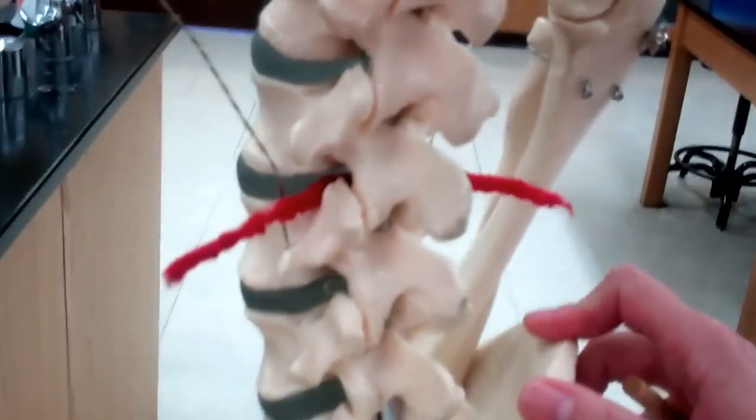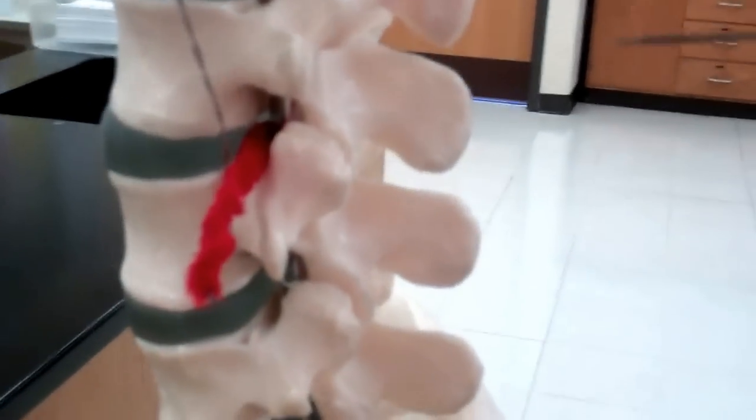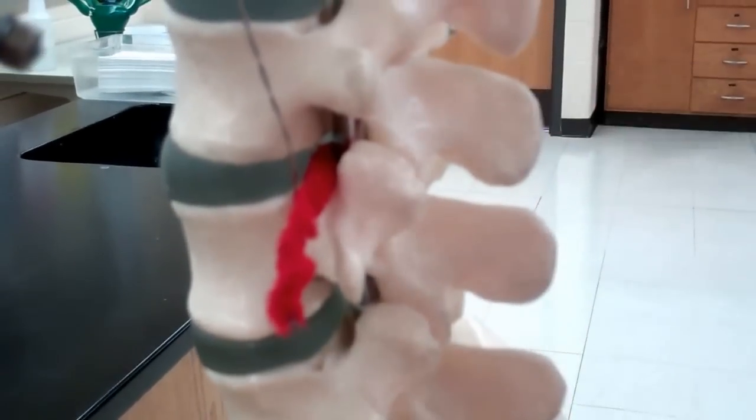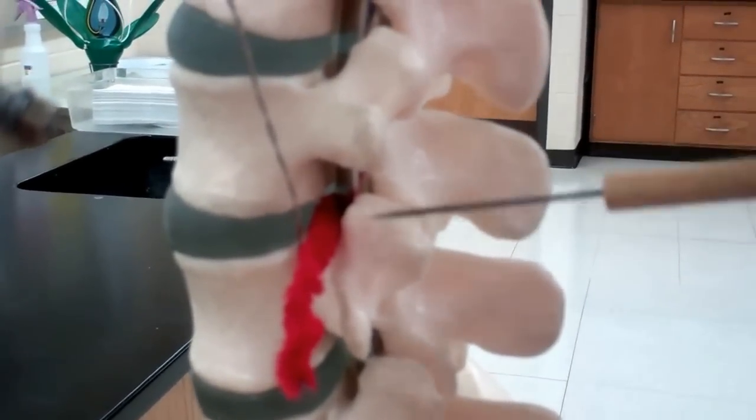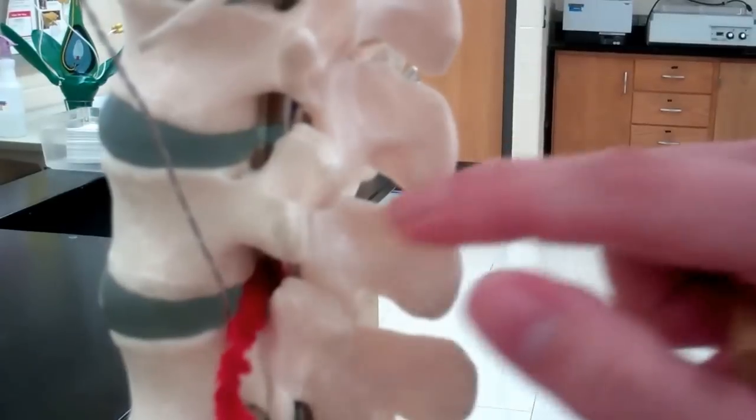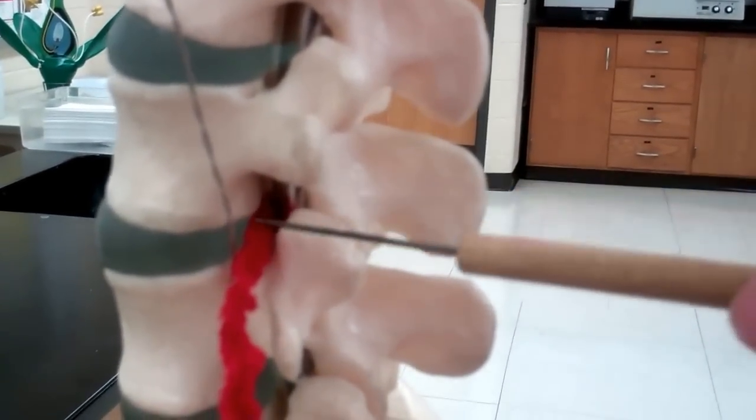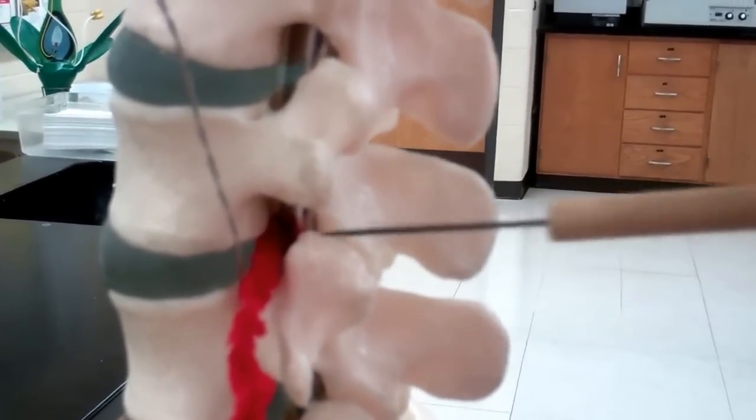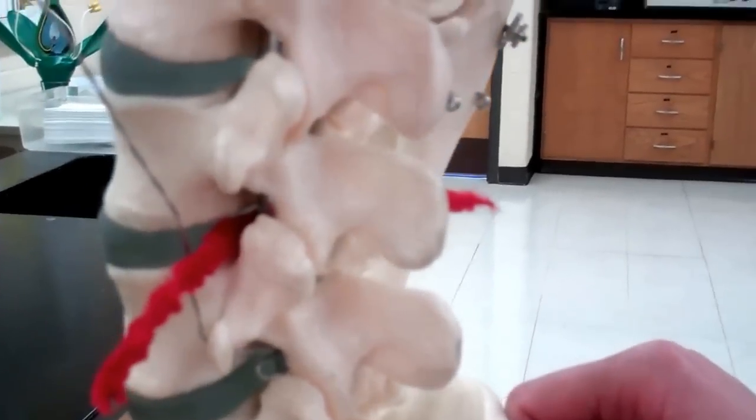We stuck a red pipe cleaner in here. This red pipe cleaner is in between two vertebrae. It's intervertebral, and it's demonstrating a hole. This red pipe cleaner is running through what we call the intervertebral foramen - the hole in between the two vertebrae. This is where our spinal nerves will exit our spinal column.